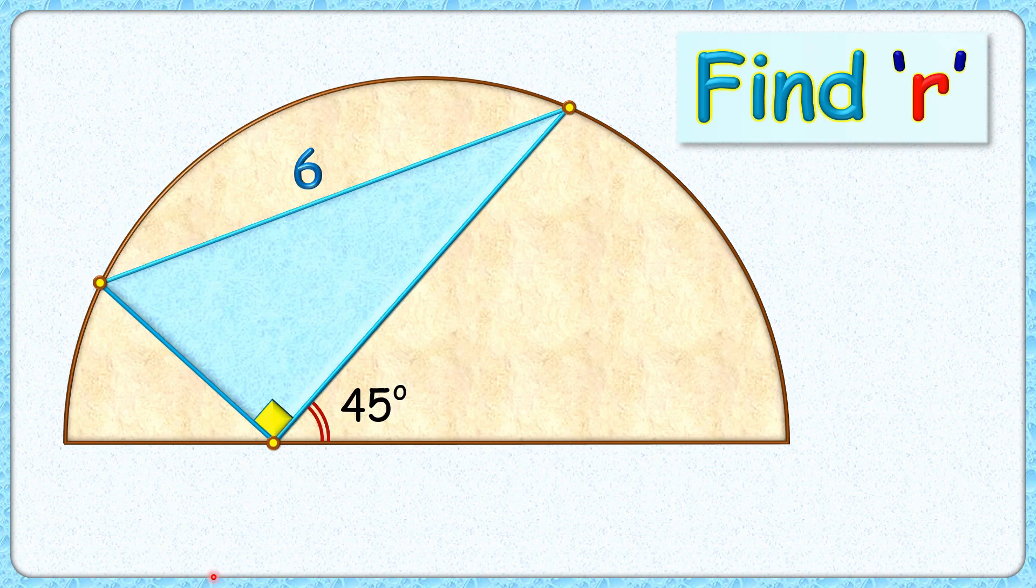Welcome everyone, this question is really interesting. Given to us is a right angle triangle with hypotenuse length 6 cm inside a semicircle such that this base length is making angle of 45 degrees with the diameter of semicircle.